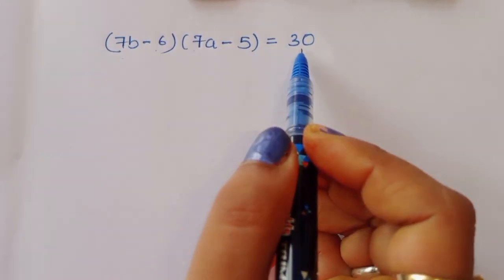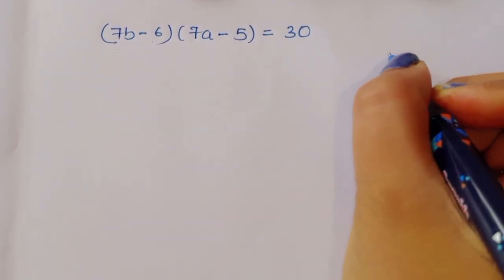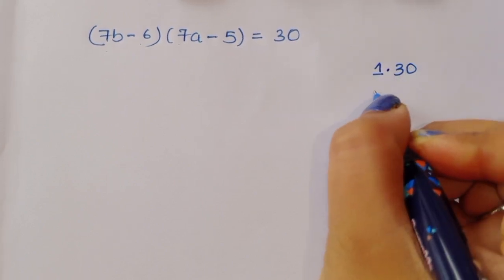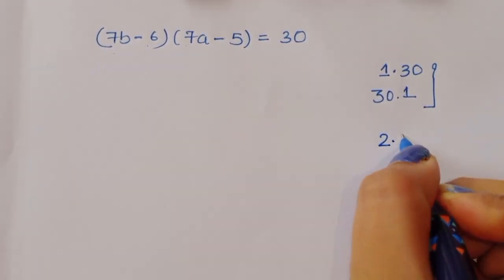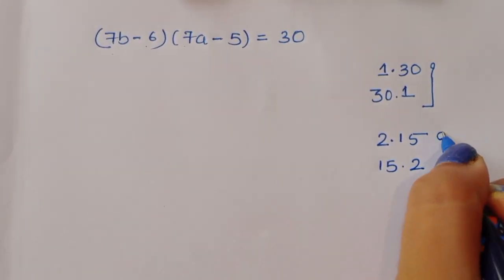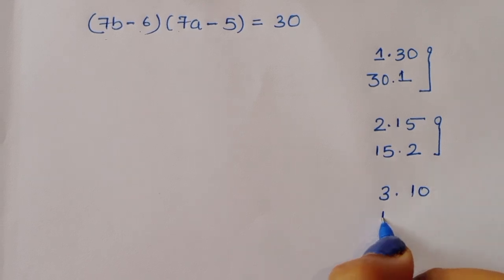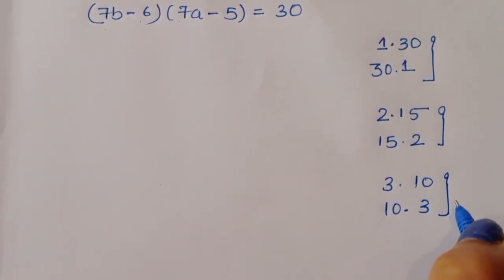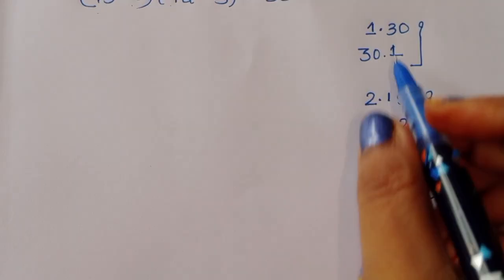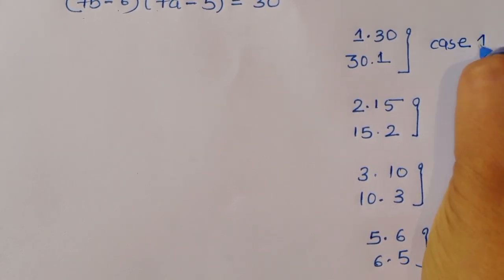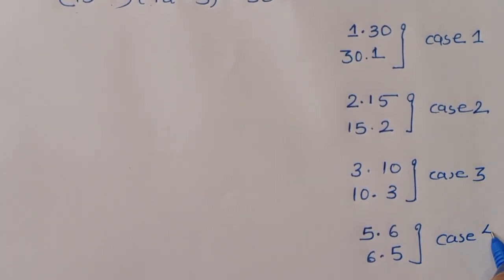Now we need to find the factor pairs of 30. The factors are: Case 1: 1×30 or 30×1. Case 2: 2×15 or 15×2. Case 3: 3×10 or 10×3. Case 4: 5×6 or 6×5. So we have four cases to check.